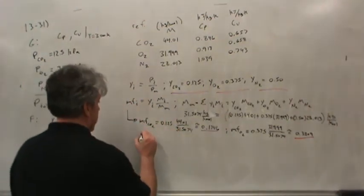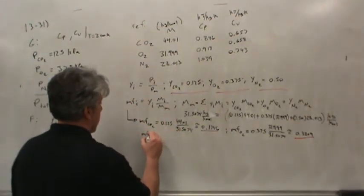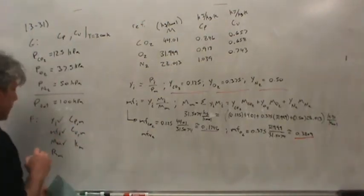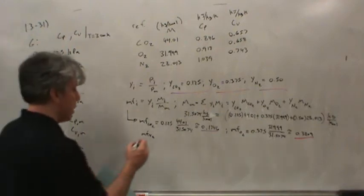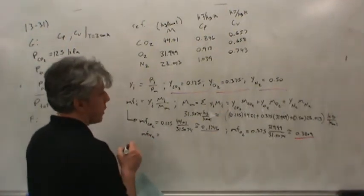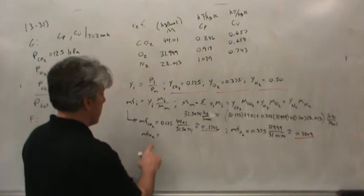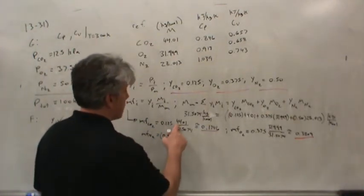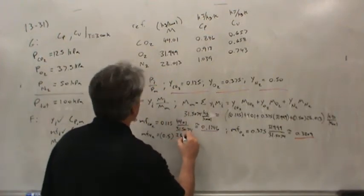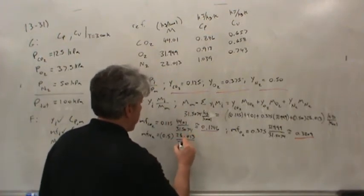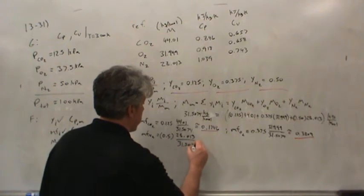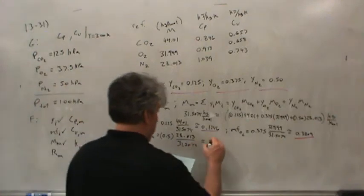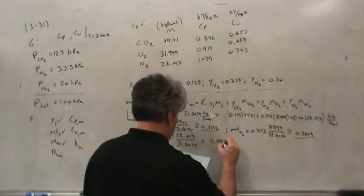Now the mass fraction of nitrogen: 0.50 × (28.013 / 31.5074), which comes out to 0.4445. So we've got the mass fractions for all three species, and we've already found the apparent molecular weight of the mixture.